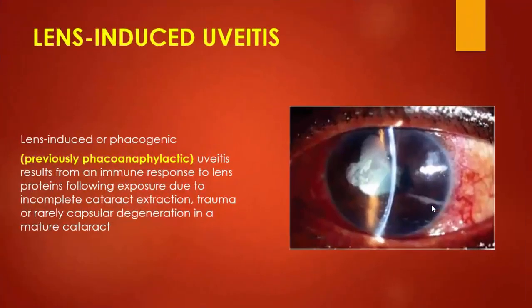Lens-induced uveitis, also called phacogenic or previously phacoanaphylactic uveitis, is a type of uveitis caused as an immune response to an injured lens with exposed lens material to the immune system, occurring after incomplete cataract extraction, trauma, and rarely capsular degeneration as in cases of phacolytic changes in hypermature cataracts.